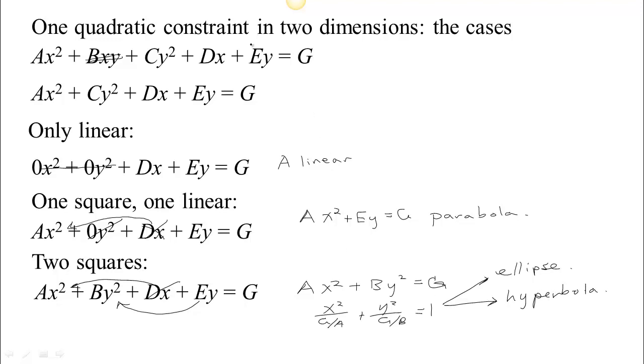So if we're thinking about in two dimensions and we think about your general quadratic constraint, then it really reduces to either a line or one of your three conic sections. So, our next task is going to be to take this and say, well what if we have a quadratic constraint in three dimensions, what are the possible shapes that we can get? So that's where we're going next. We'll be right back.